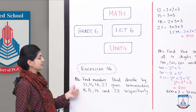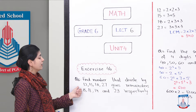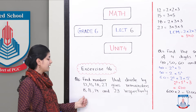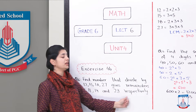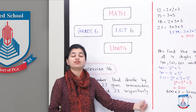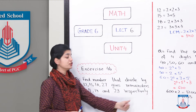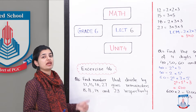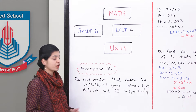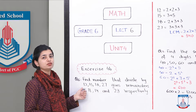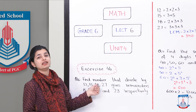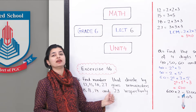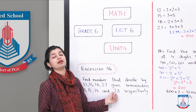Question number 6: Find the smallest number that, when divided by 12, 15, 18, and 27, gives remainders 8, 11, 14, and 23 respectively. The first thing we have to address is what 'respectively' means — it means that each number has its own remainder. For instance, 8 is for 12, 11 is for 15, 14 is for 18, and 23 is the remainder for 27.